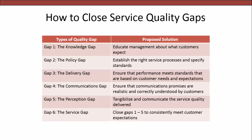GAP 3: The Delivery Gap. Ensure that performance meets standards that are based on customer needs and expectations. We need to ensure that customer service teams are motivated and able to meet these service standards. This requires HR to recruit, train, and clarify employee roles. It's also important to empower managers and employees so that decision-making can be made by frontline staff or those in the field. Lastly, a firm should measure performance, provide regular feedback, and reward customer service team performance as well as individual employees and managers for attaining quality goals.